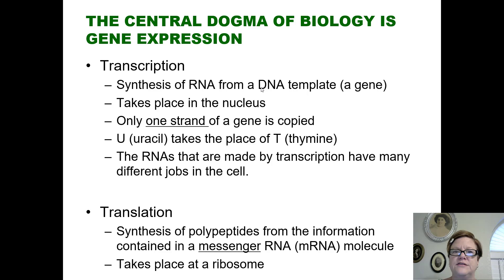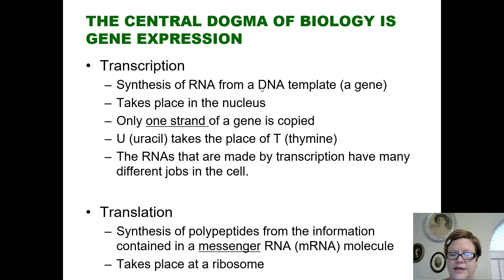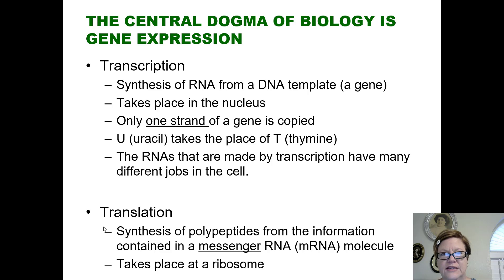RNAs made by transcription can do lots of things in the cell. For some genes, once copied into RNA, the RNA itself is the final product. For other genes, the RNA made is called mRNA, and if it's an mRNA, then it will move on to the next step, which is called translation.